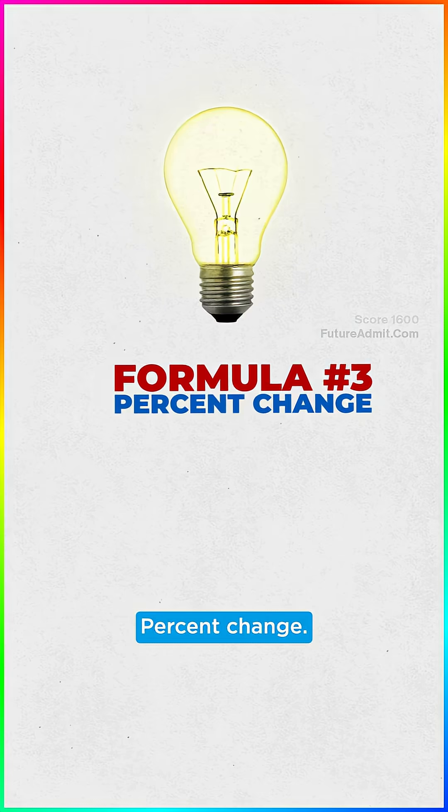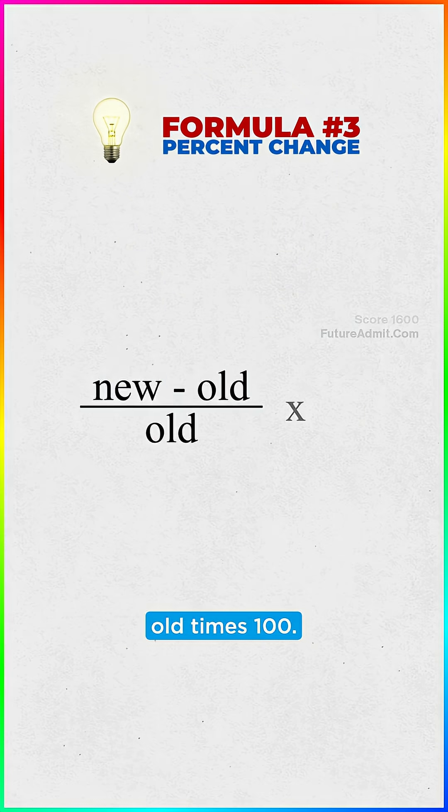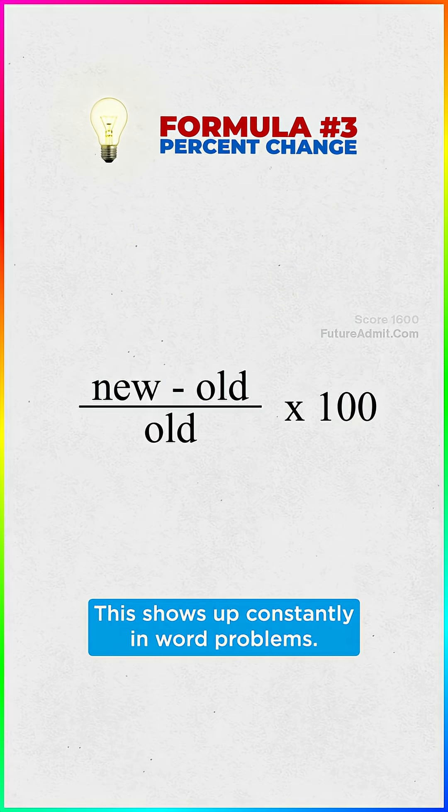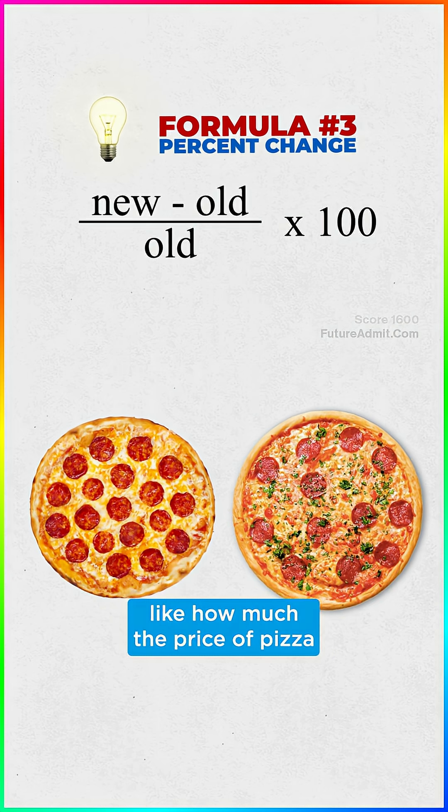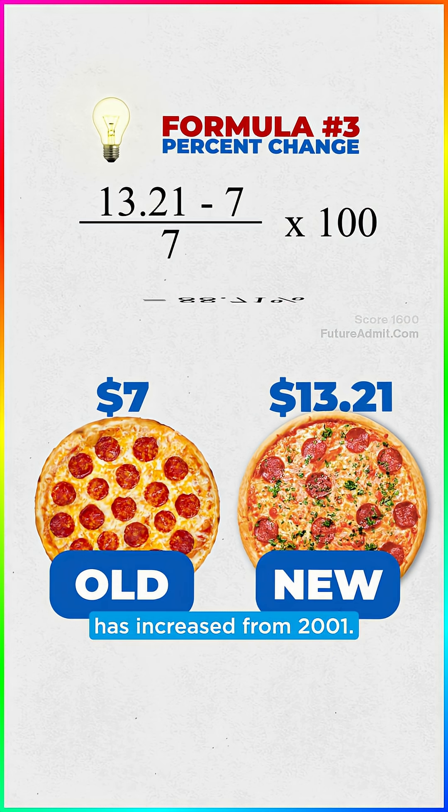Okay, Formula 3, percent change: new minus old over old times 100. This shows up constantly in word problems, and it tells you the percent change between two numbers, like how much the price of pizza has increased from 2001.